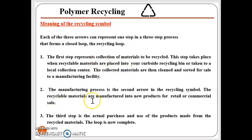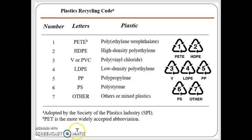So the first arrow of the recycling symbol is the collection of materials. The second arrow is the processing or manufacturing of the recycled materials — the collected items are recycled and manufactured into new products. The third arrow is the reuse of these recycled materials. So when we talk about recycling, we have: collection, manufacturing into new products, and reuse of recycled materials.